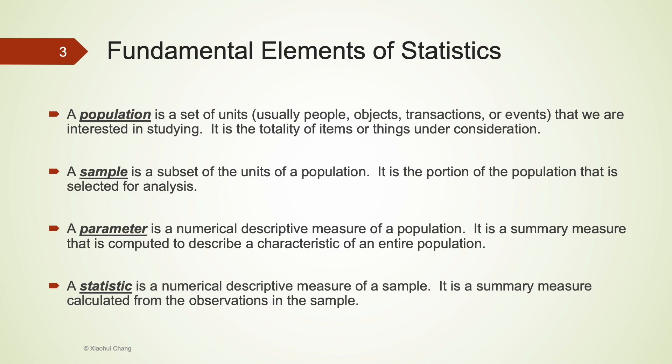Population is a set of units — it could be people, objects, transactions, or events that we are interested in studying. It is the totality of all items under consideration. Parameter is a numerical descriptive measure of a population — it is a number usually related to the population.